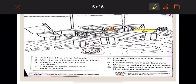Now, draw a whale in the water. You're going to have to draw a whale in the water. Then, number seven, draw a box around each knot. This is a knot. And this is a knot.